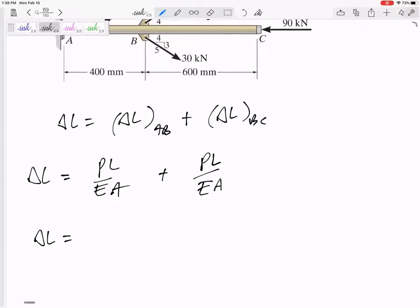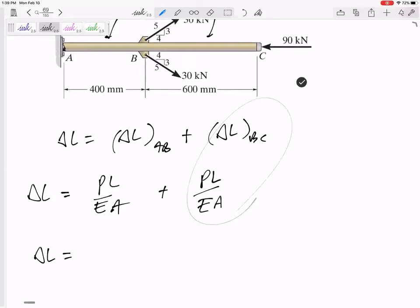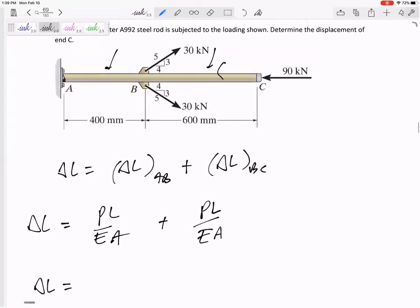So the delta L, I think I want to start with section BC. Can you just visually see that it's going to be 90 kilonewtons in compression? That's going to be 90 kilonewtons, negative 90 kilonewtons.